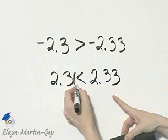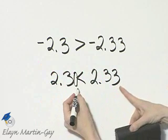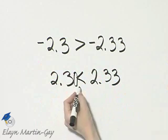There's an understood zero here and this is 3. So this is greater than this.